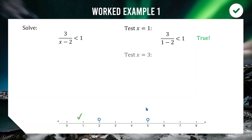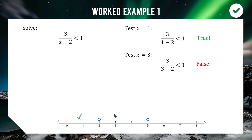Testing x = 3 (between 2 and 5): substituting gives 3/(3 − 2) = 3, and 3 < 1 is false. So values between 2 and 5 are not part of our solution.